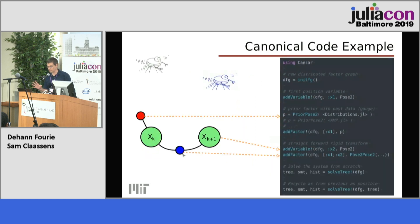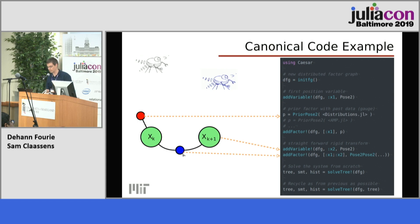You want to be able to build this graphical model based on sensor data in your local situation. So you build what we call a distributed factor graph, because it can live on a database, over the cloud, or in memory. You add variables — maybe x1 — then add a prior as the factor, then add another variable and grow. When you want to trigger inference to get the best marginal estimate of xk and xk+1, you call solve tree.